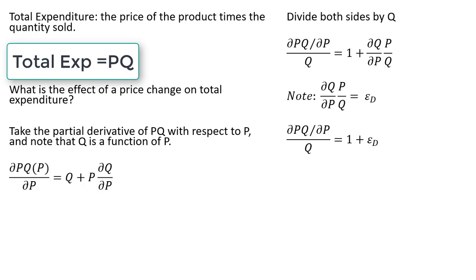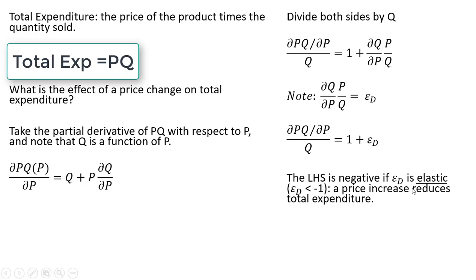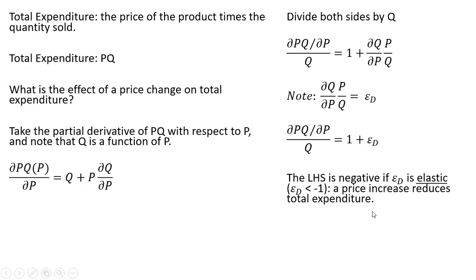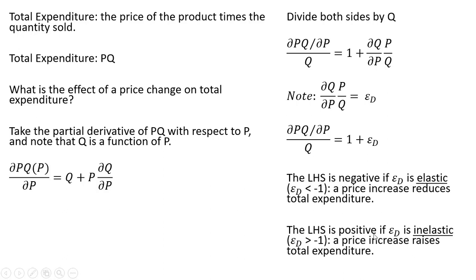If the left-hand side is negative, that will occur if the elasticity of demand is elastic — if E_d is less than minus 1, like minus 2. A price increase then reduces total expenditure, since 1 plus (−2) gives a negative result, indicating total expenditure moves in the opposite direction of a price increase. The left-hand side is positive if demand is inelastic — if E_d is greater than minus 1, like minus one-half. Then 1 plus (−1/2) gives a positive result, so a price increase raises total expenditure. That's it — I hope you found this video helpful.